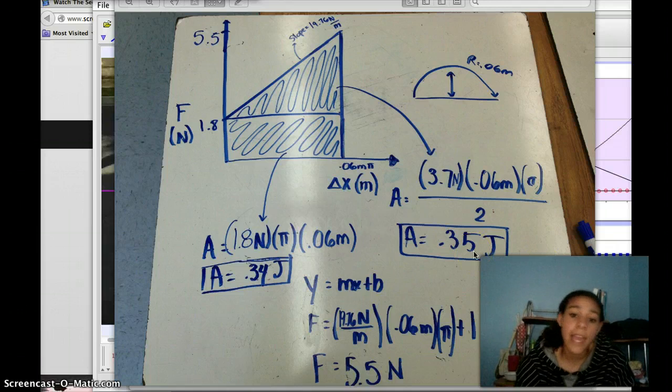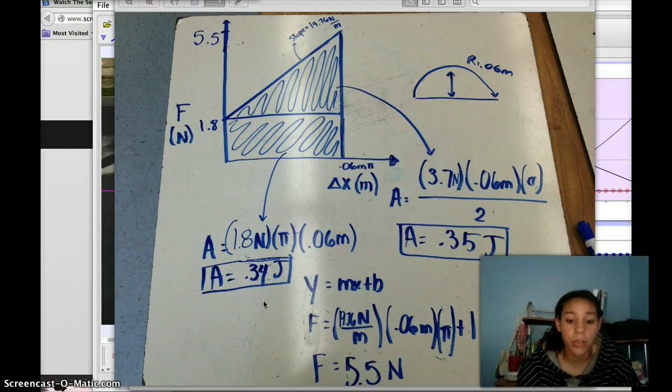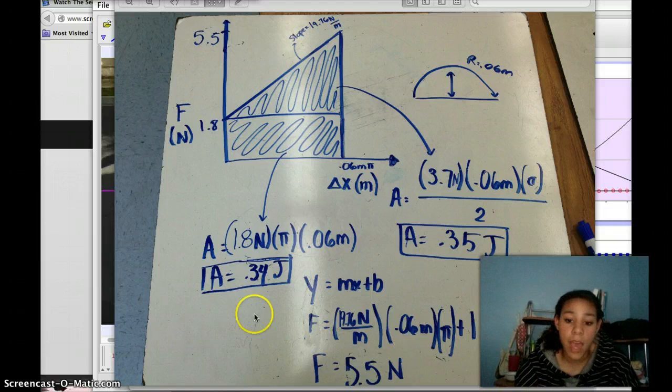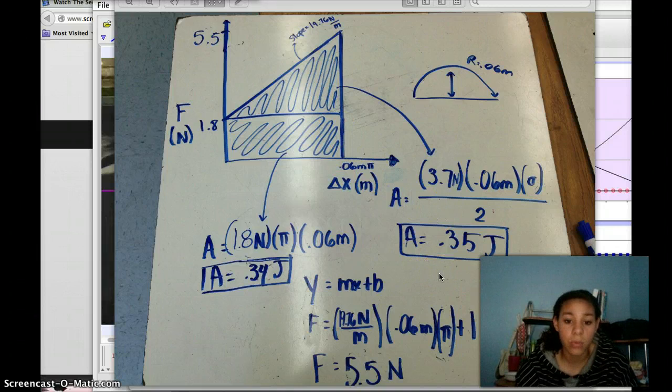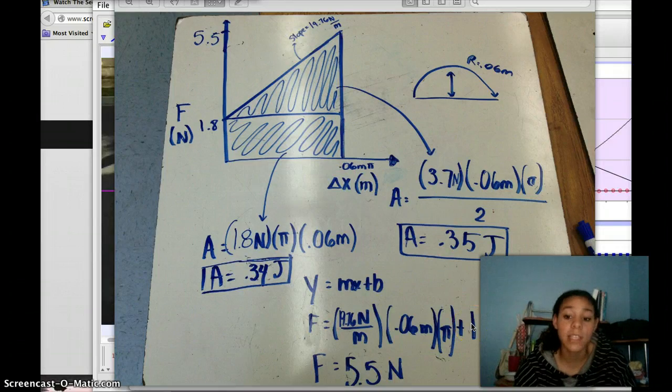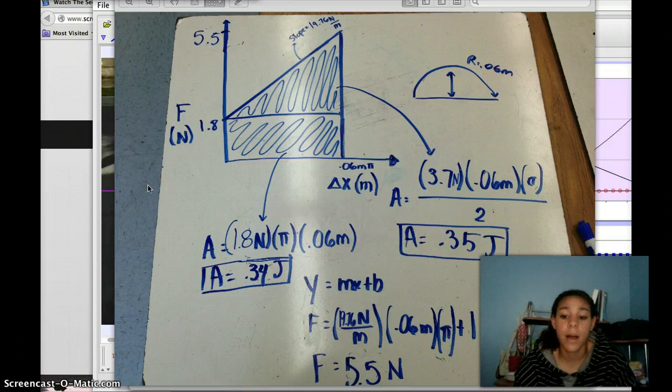And I got 0.34 joules and then the total and then when I found the area of the triangle I got 0.35 joules and then when you add that together you get a total of 6.69 joules so that was the total energy stored in my mousetrap spring.